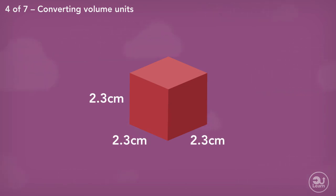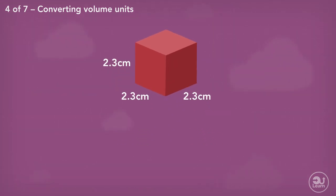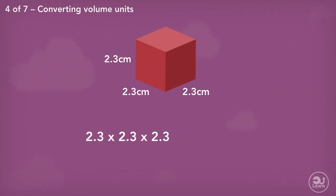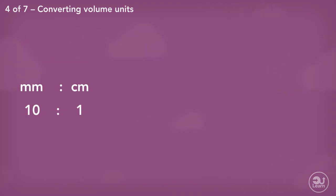We change the millimeters to centimeters by dividing by 10. The volume of the cube is therefore equal to 2.3 times by 2.3 times by 2.3 centimeters, which equals to 12.167 centimeters cubed. We can identify the relationship between millimeters to centimeters and millimeters squared and centimeters squared. But what about millimeters cubed and centimeters cubed?